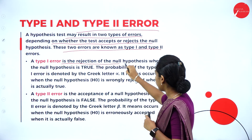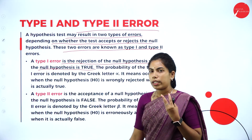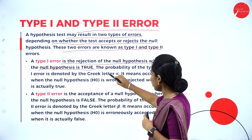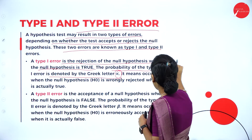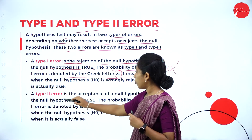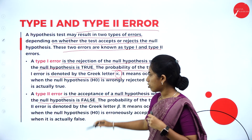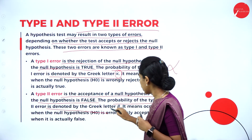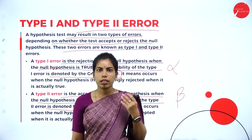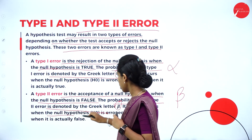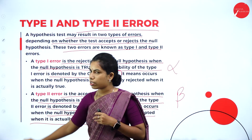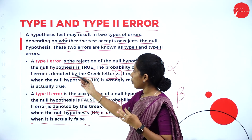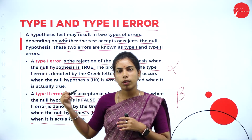Type 1 error is the rejection of the null hypothesis when it is actually true — also called false rejection or false positive. The probability of Type 1 error is denoted by the Greek letter alpha. Type 2 error is the acceptance of the null hypothesis when it is actually false — a false negative. The probability of Type 2 error is denoted by the Greek letter beta. So: null hypothesis is true but rejected = Type 1 error; null hypothesis is false but accepted = Type 2 error.